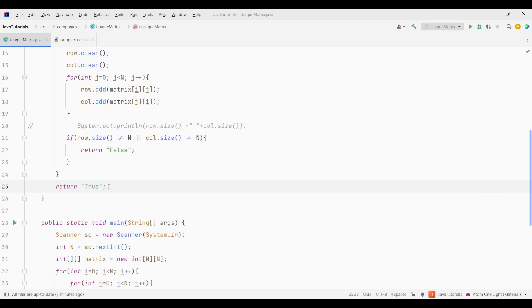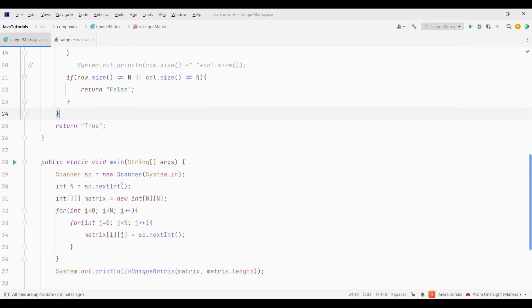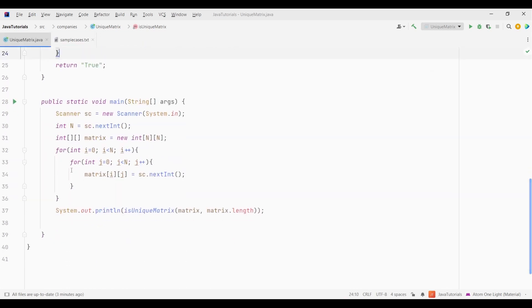Otherwise, if both of them have their size equal to n, we will continue to the next row and column. Now if the outer loop terminates, it indicates that we didn't encounter any missing value. Thus we return true, meaning that the matrix is a unique matrix.